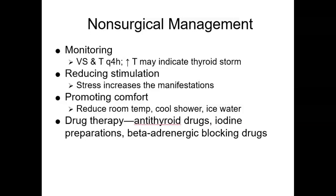Instruct the patient to report immediately any palpitations, dyspnea, vertigo, or chest pain. Increases in temperature may indicate a rapid worsening of the patient's condition and the onset of a thyroid storm, a life-threatening event that occurs with uncontrolled hyperthyroidism and is characterized by high fever and severe hypertension. Immediately report a temperature increase of even one degree Fahrenheit. If temperature is elevated, immediately assess the patient's cardiac status. If the patient has a cardiac monitor, check for dysrhythmias.